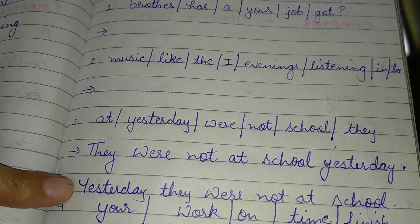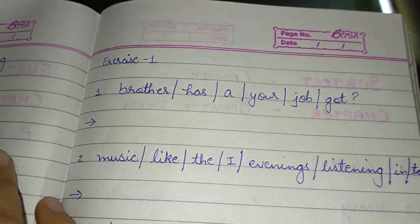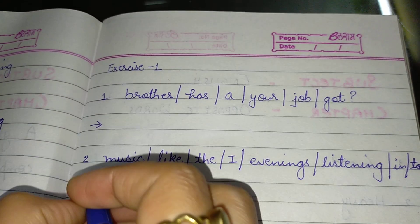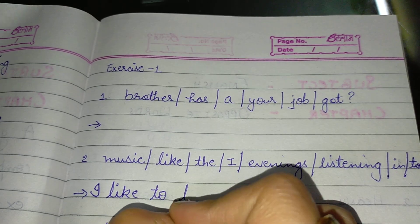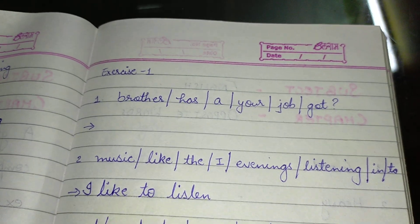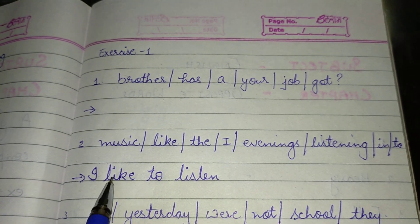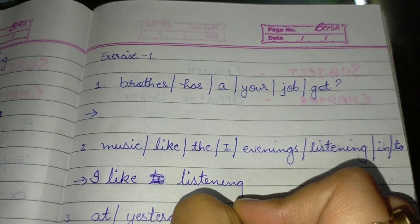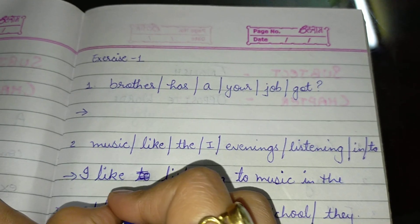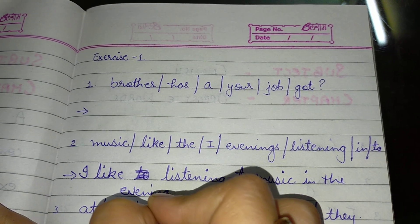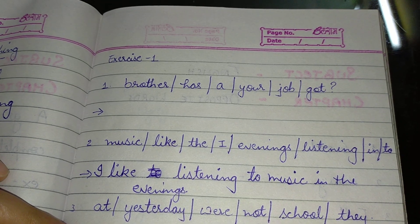'Music like the I evening listening into' — we need to think which word to start with. We can write: 'I like listening to music in the evening.' Now it is giving a complete sense. This makes a complete sentence and gives meaning to the sentence.